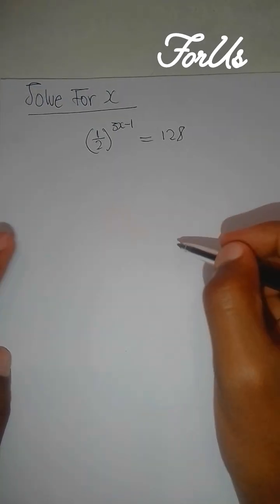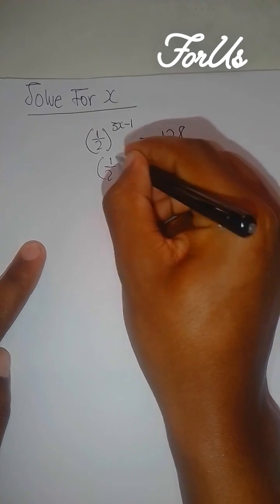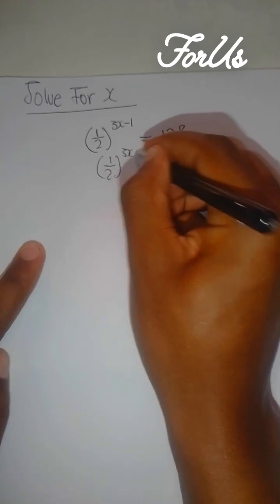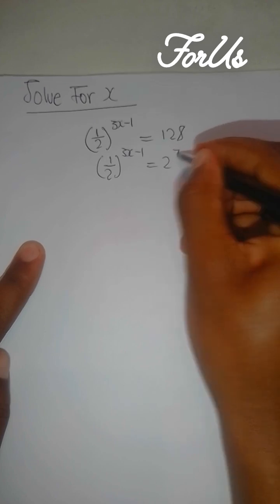When you solve something like this, this is how you do it. One-half to the power of 3x minus 1. This equals 128, which is the same as 2 to the power of 7.